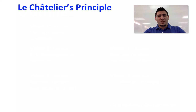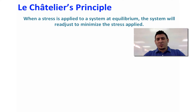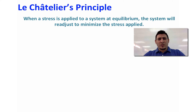Le Chatelier's principle states that when a stress is applied to a system at equilibrium, the system will readjust to minimize the stress applied. The types of stresses that we can apply on the equilibrium could vary from concentration to volume to pressure to temperature. We are going to discuss all these changes in this video.